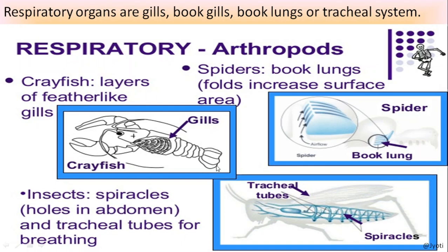In case of crayfish - which is like shrimps - they have layers of feather-like gills arranged like the pages of a book, so they are called book gills. Book lungs are present in spiders. Book lungs are folded structures which increase the surface area for exchange of gases.